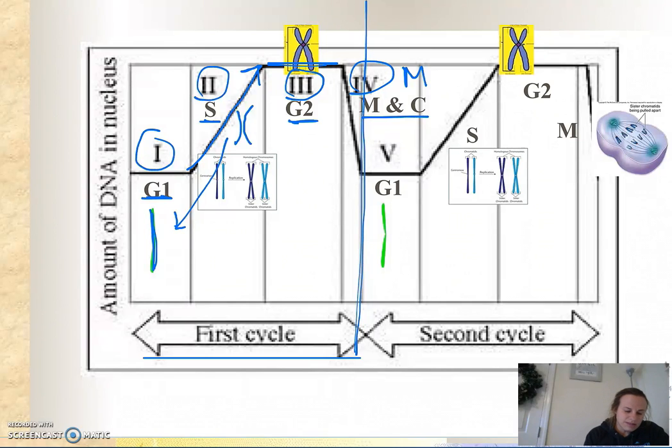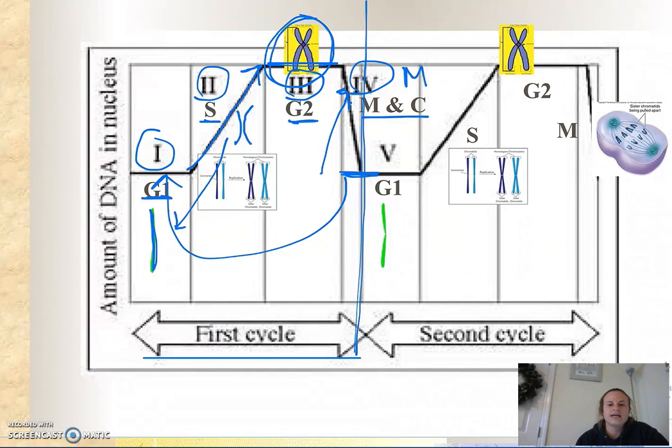In stage four, in mitosis and cytokinesis, the amount of DNA in my cell returns to the amount of DNA that I started out with in my parent cell. Now I end up with two daughter cells that have equal amounts of DNA, equal amounts of DNA as the parent, and in fact that DNA is an exact copy.